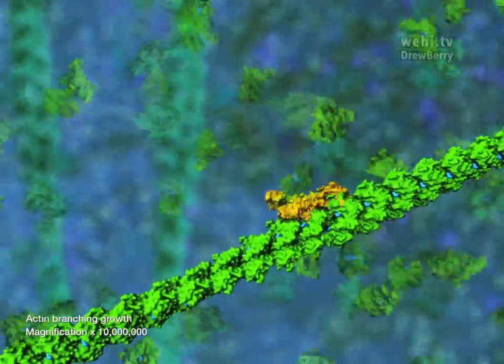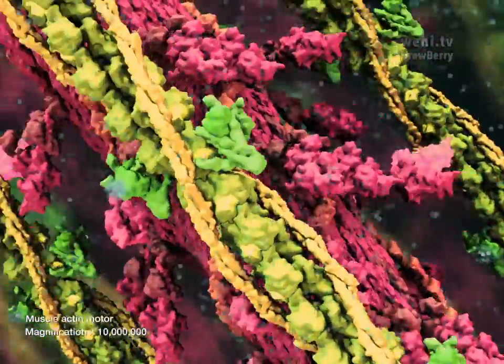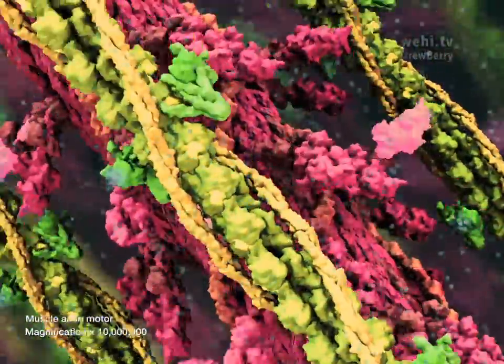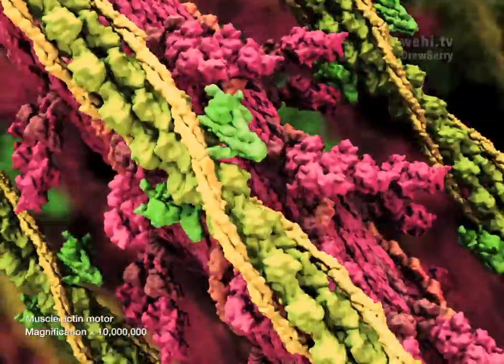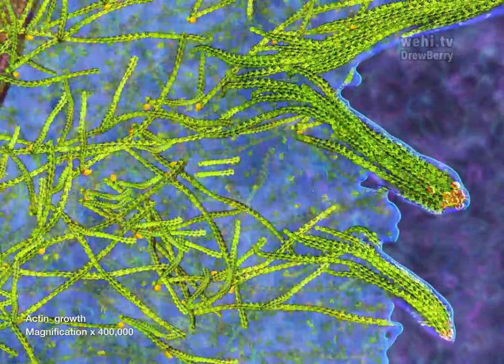Actin filaments are thin, flexible filaments that form cross-linked bundles and branching networks. Actin is particularly important for cell movement, central to the contractile engine in muscle cells, and provides the mechanical force for cell movement at the plasma membrane.